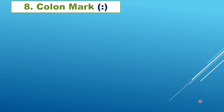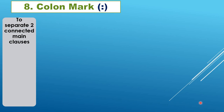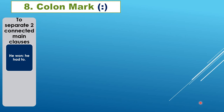Now let us see the colon mark. The colon mark is a double full stop used vertically — it is a big pause but not the end of a sentence; it is very close to a full stop. It is used to separate two connected main clauses, where instead of using a conjunction or comma, you remove those and put a colon. For example: 'He won: he had to.' Both are connected — separating them loses the connection.